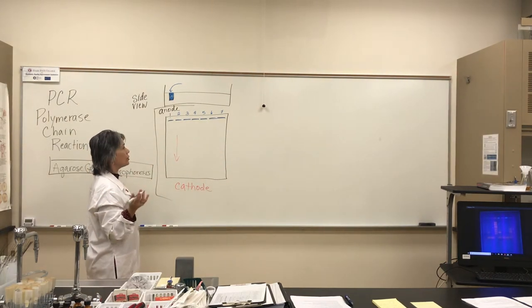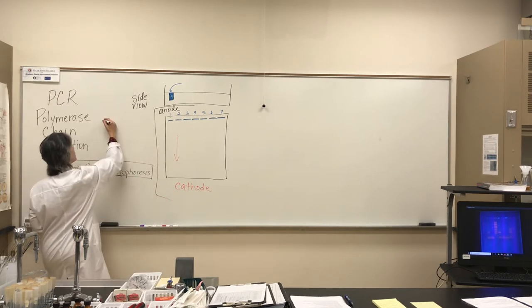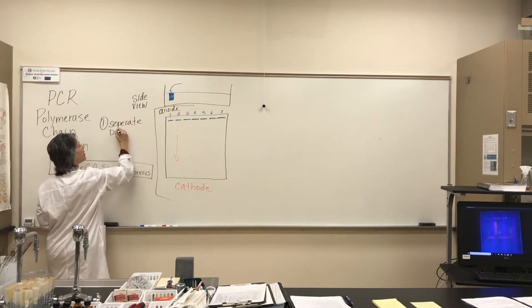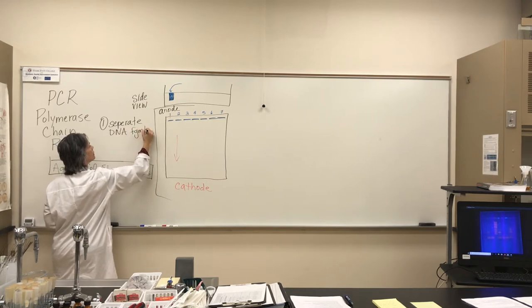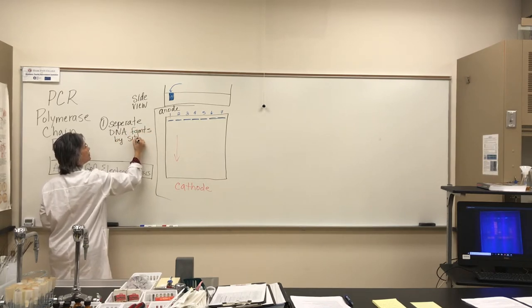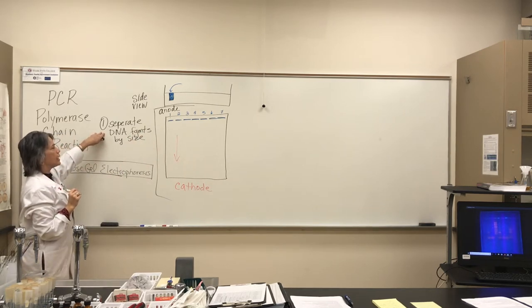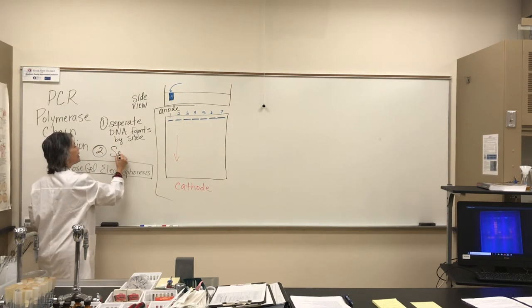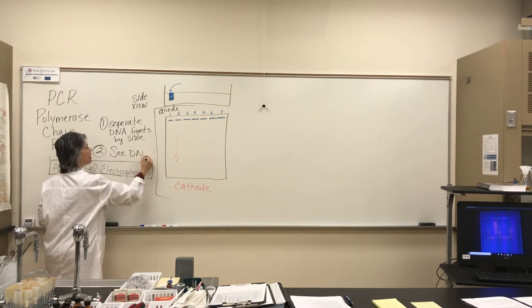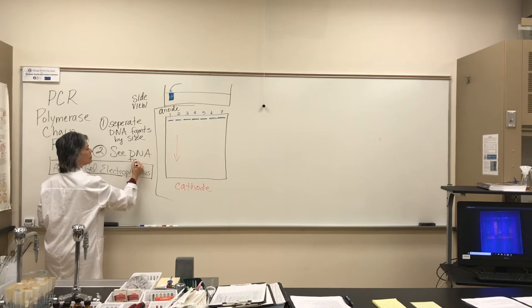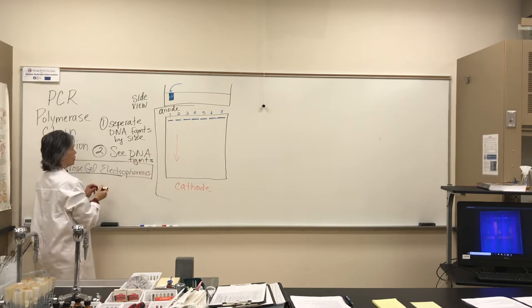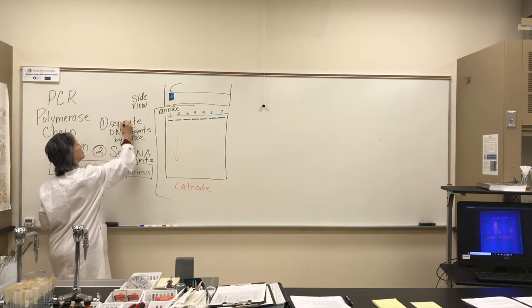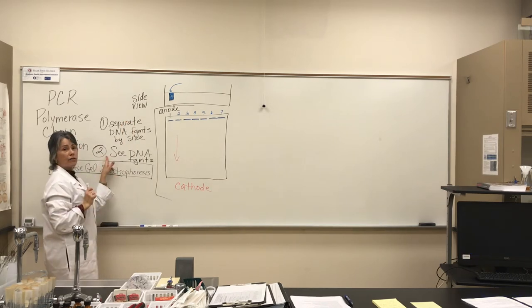And while it's running, the little bits of DNA that are in our sample enter the gel. And how does agarose gel electrophoresis work? The gel is a matrix. But first, what are the two reasons we're doing agarose gel electrophoresis? Number one, it's going to separate DNA fragments by size. That's what agarose gel electrophoresis does. Number two, it's going to enable us to see or visualize the DNA fragments in our samples.